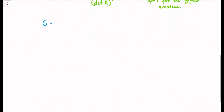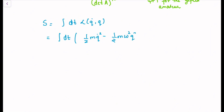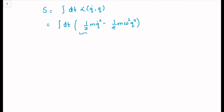For that, we write the action separately as the integral of the Lagrangian. For the simple harmonic oscillator, this is half m v squared minus half m omega squared q squared. Let's focus on the q-dot squared term and call it I, temporarily skipping the m over two factor. So we are looking at the integral dt of q-dot squared.